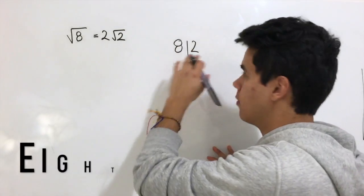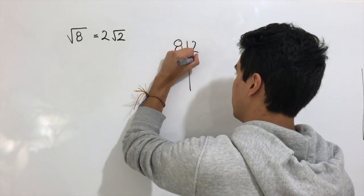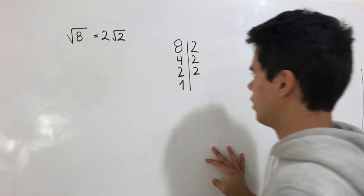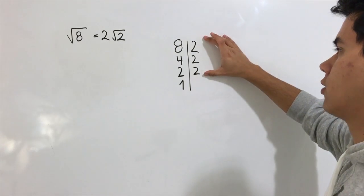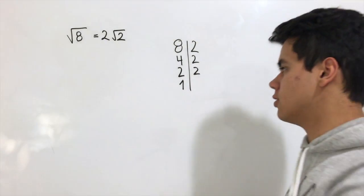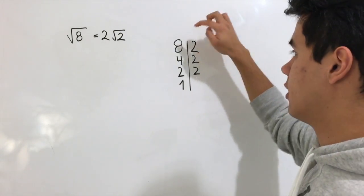When we divide 8 by 2, we end up with 4. Then we divide it by 2 again, we end up with 2, then 2, then 1. If we multiply the factors, we're going to end up with this number. It's important that you do it all the way until we get 1.